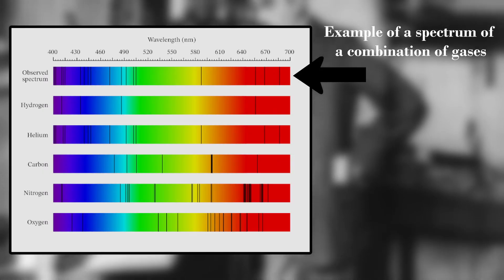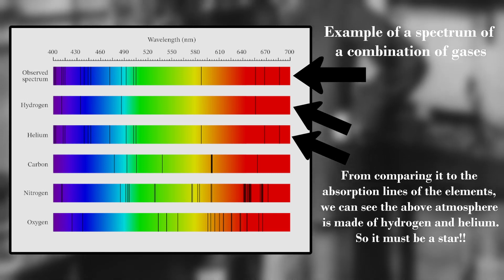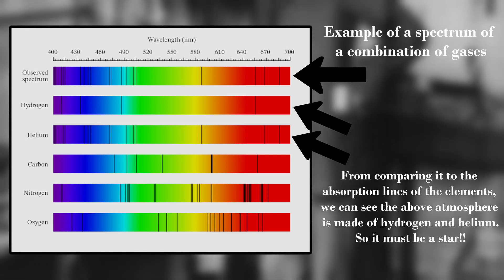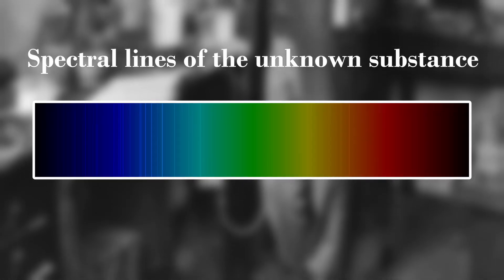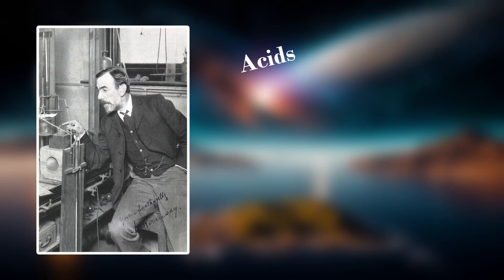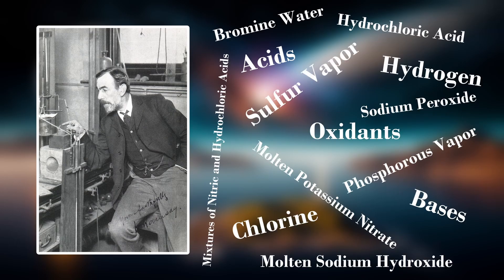They used a variety of tools to observe spectra of the gases so they could see absorption and emission lines to properly characterize the substances. They managed to extract the unknown substance from the nitrogen and found that it was highly unreactive, despite many attempts by Ramsey to get it to react with literally anything he could get his hands on.